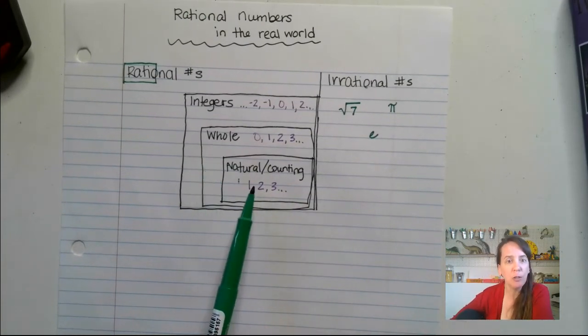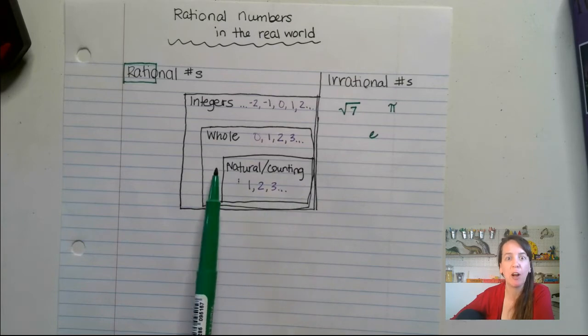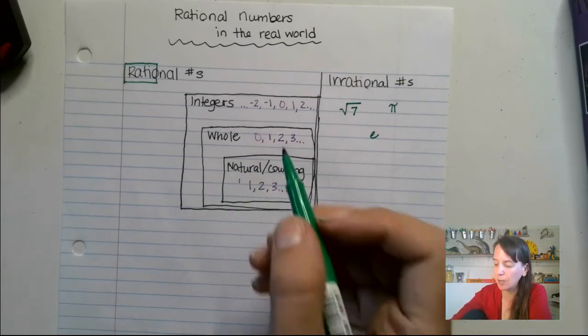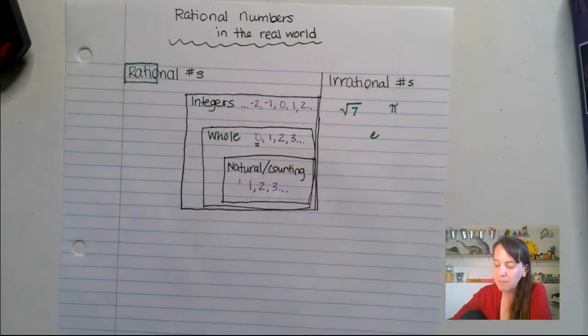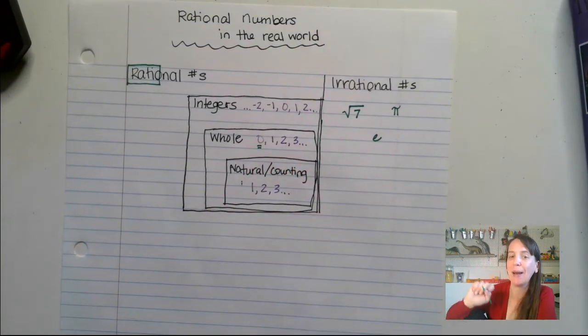Whole numbers include all those natural numbers, which is why I've gone ahead and put that box right into the whole number box. But it also includes zero. That is gonna be the key. So whole number includes zero and our natural numbers.